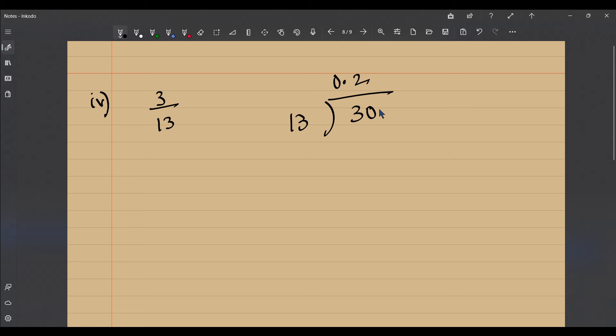13 twos is 26, the remainder is 4. A 0, 13 threes is 39, this time the reminder is 1. So a 0, but still 10 is smaller than 13, so 13 zeros are 0, so you can now add one more 0, so you have 100.